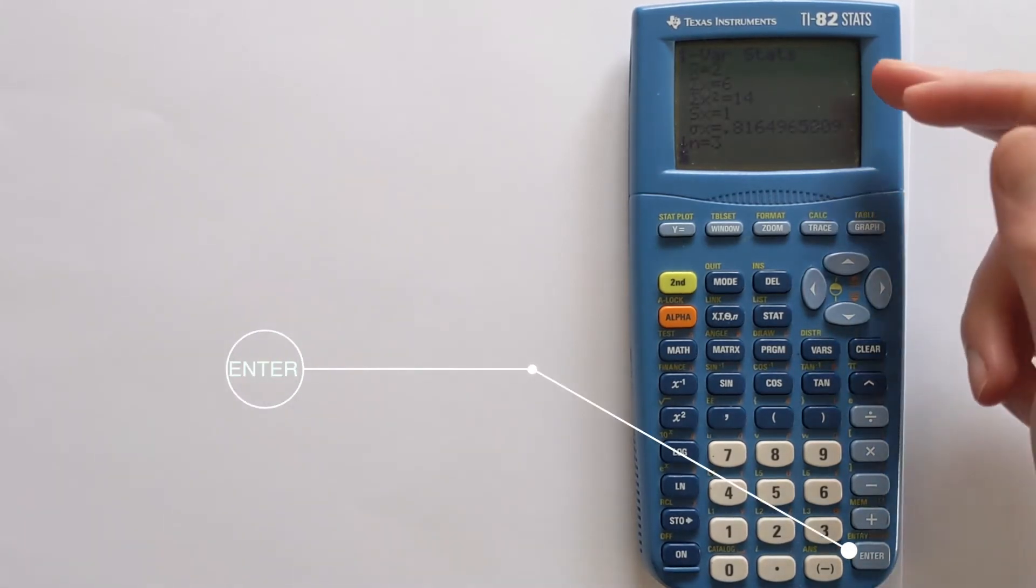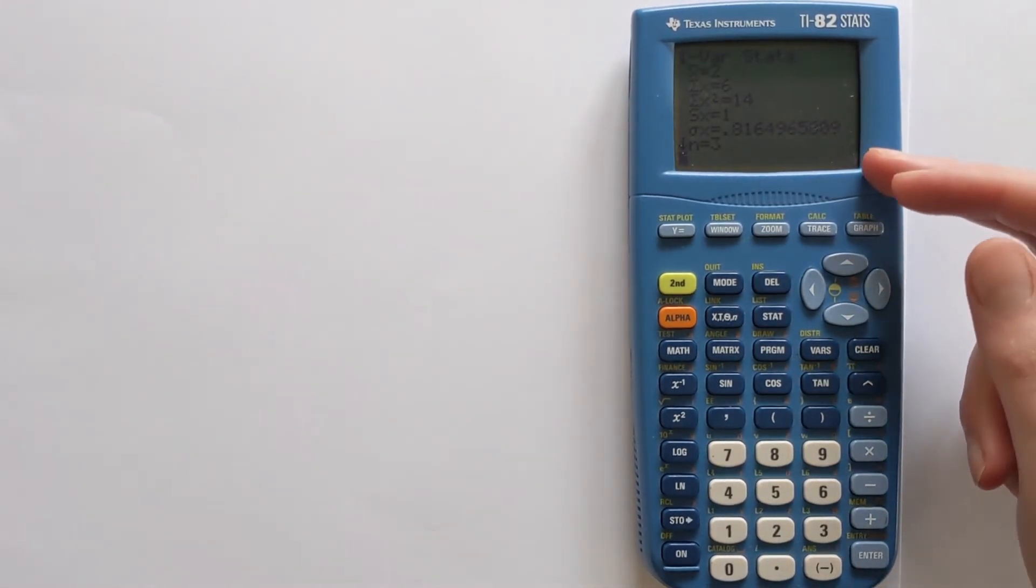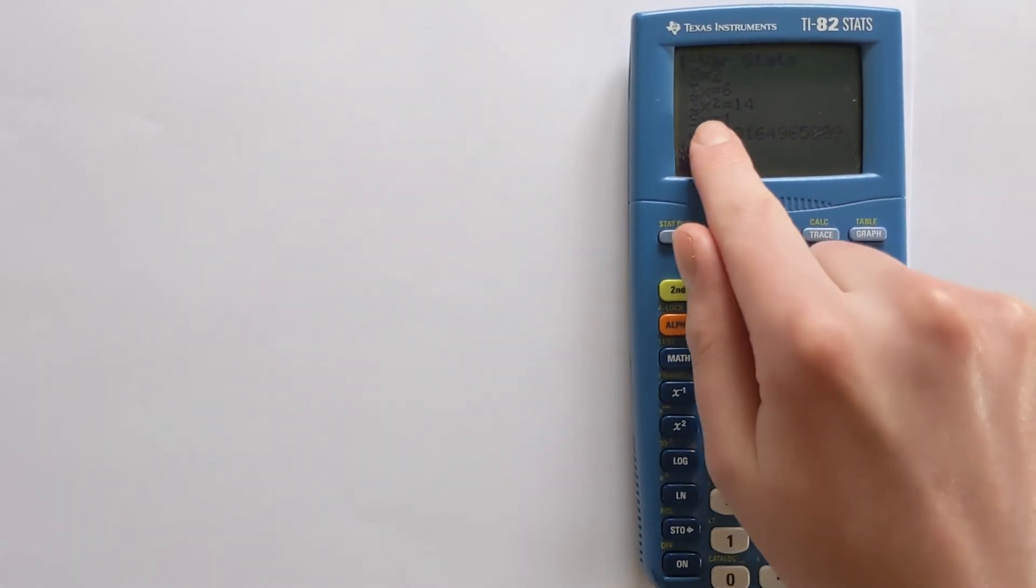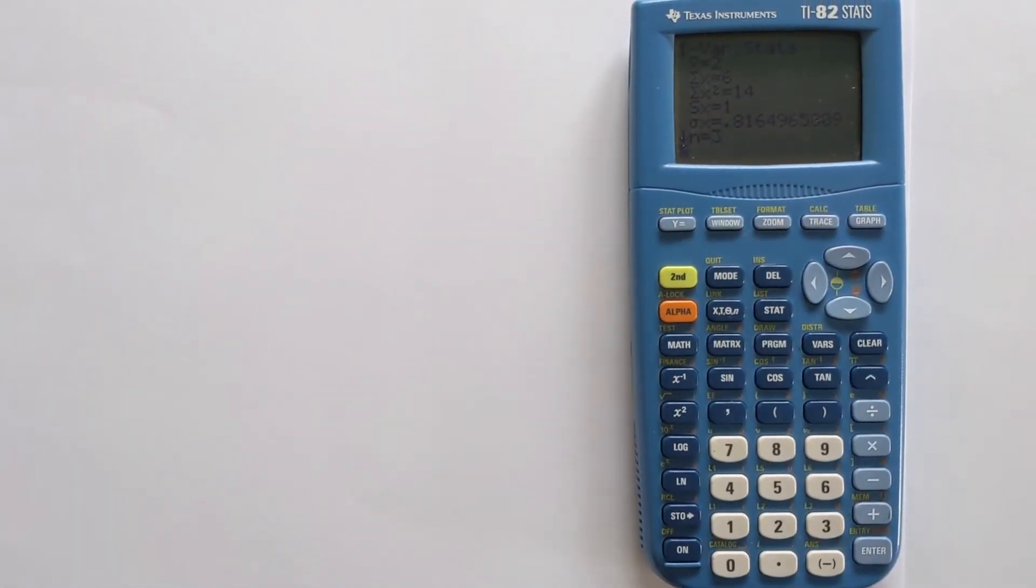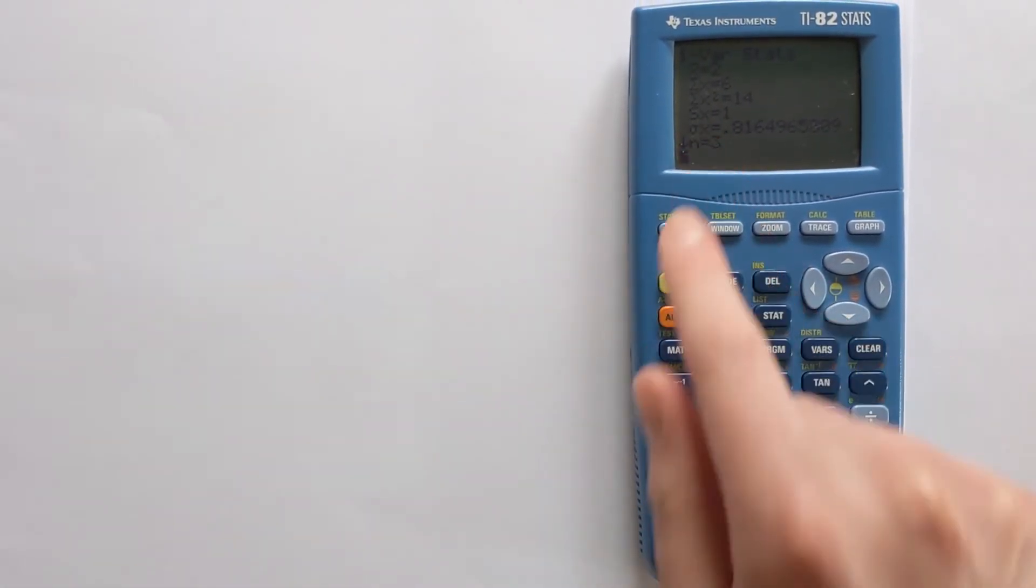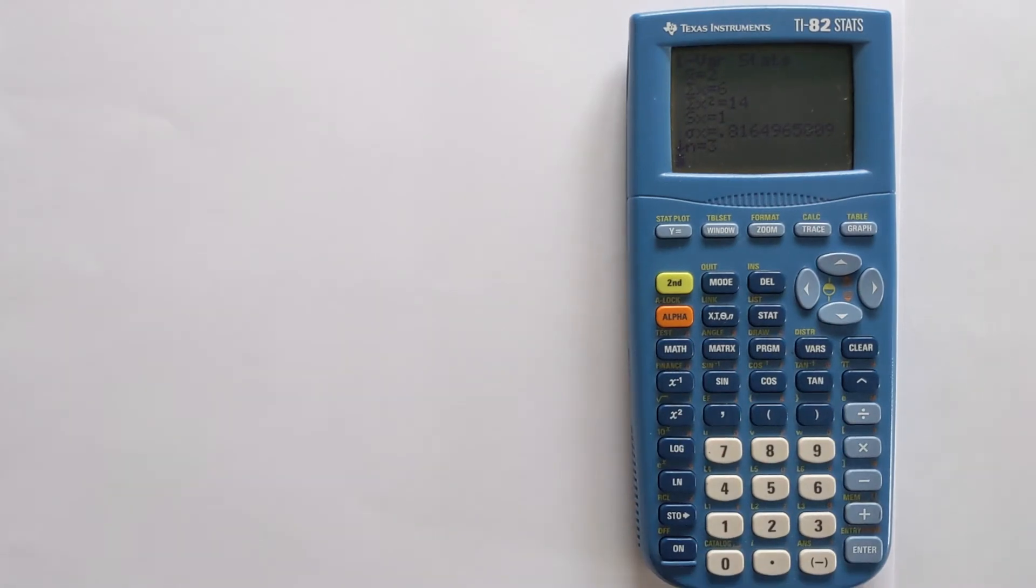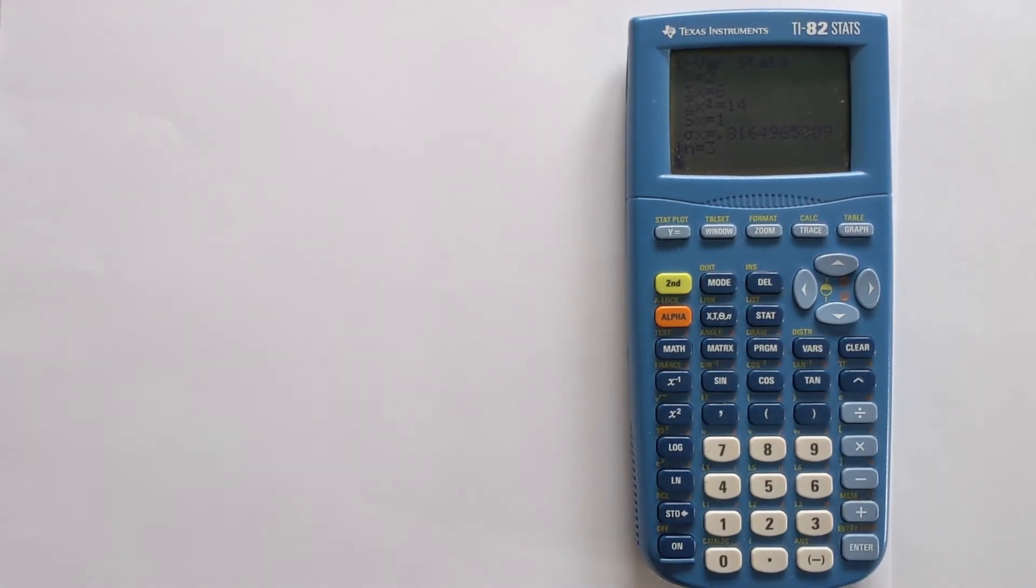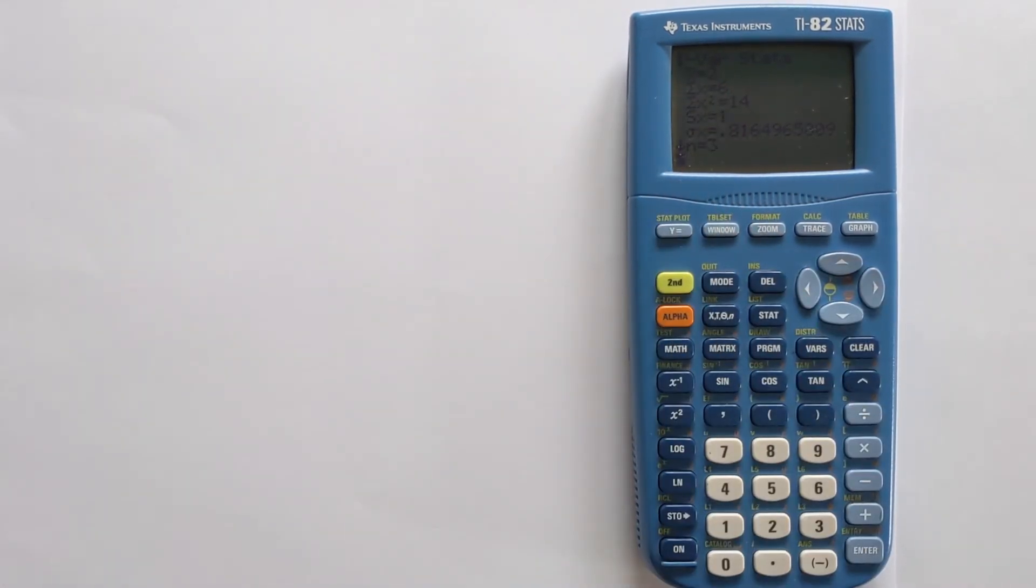If you simply press enter, it gives you all of your standard one variable statistics. You can see here is your sample standard deviation with SX. You've got sigma X, which is your population standard deviation. And at the very top, you've got your mean.